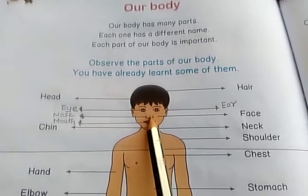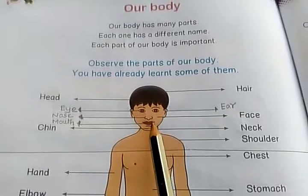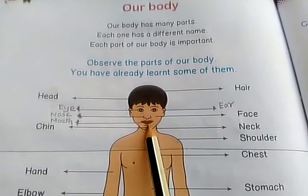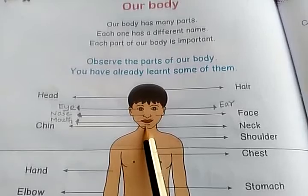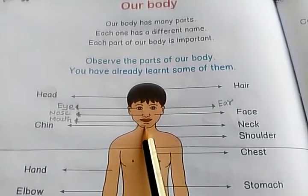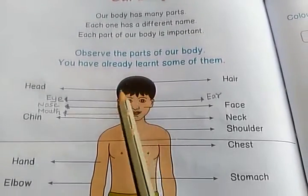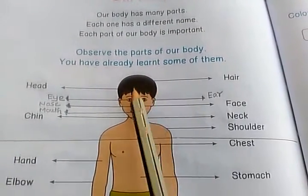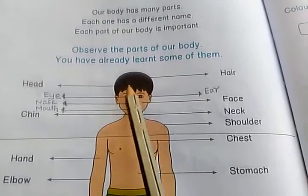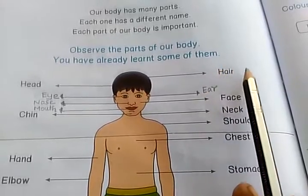Then what is this? Nose — Mooku. Then what is this? Mouth. Then what is this? Chin — Thaadai. Here we see the outside of the head; we have the black color. It is hair — Moody.